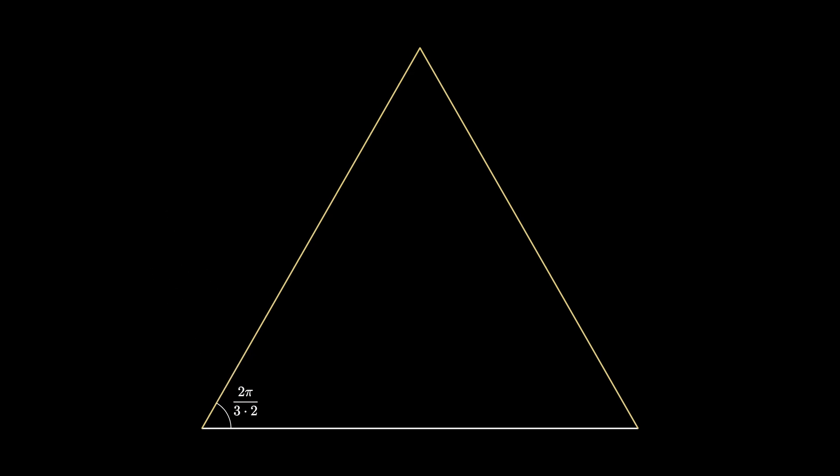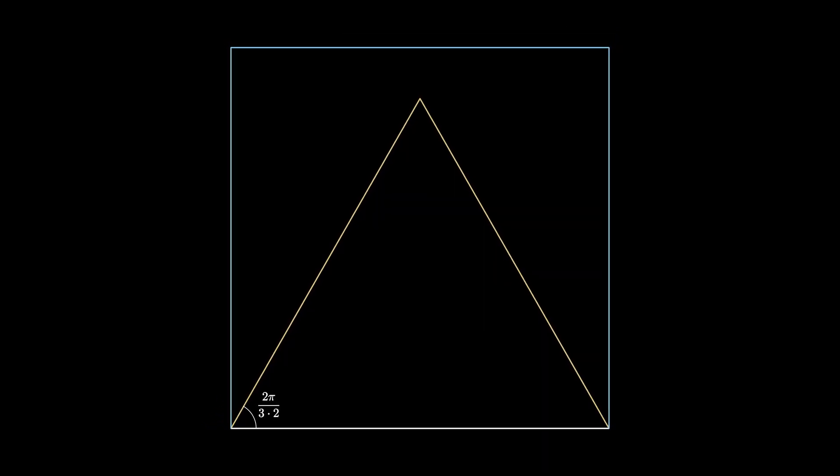Now draw a square around that equilateral triangle with side length equal to the base. The interior angle of the square is 2π divided by 4, and so the angle between the square and the triangle is 2π over 4 minus π over 3, which simplifies to 2π divided by 4 times 3.